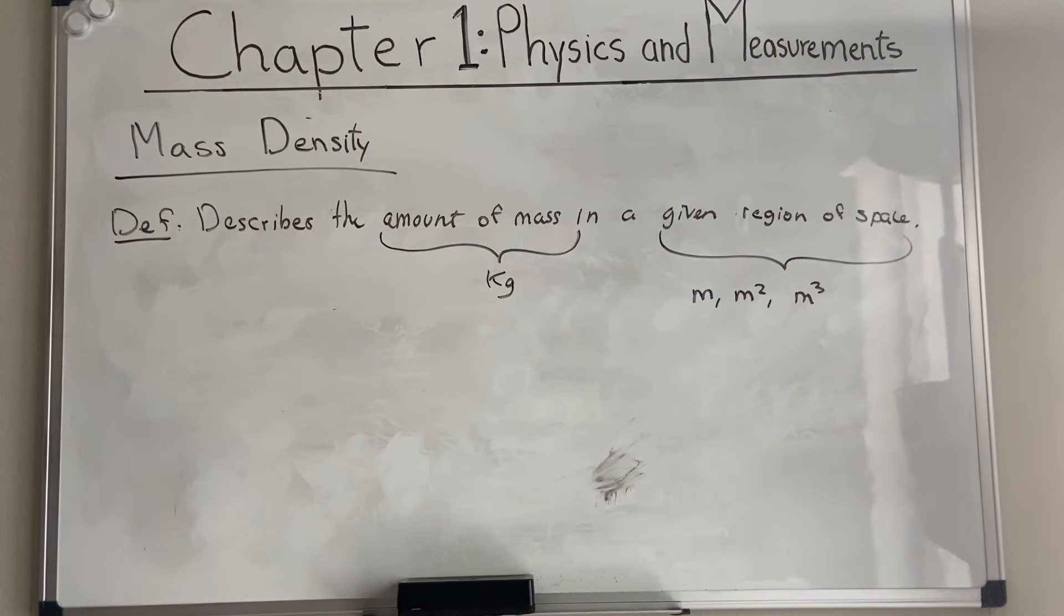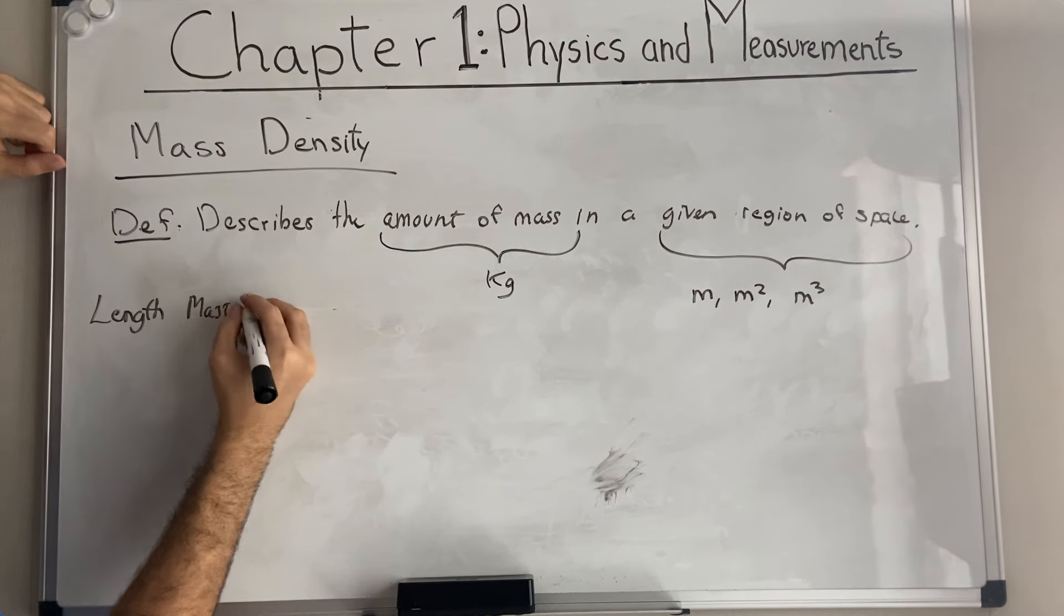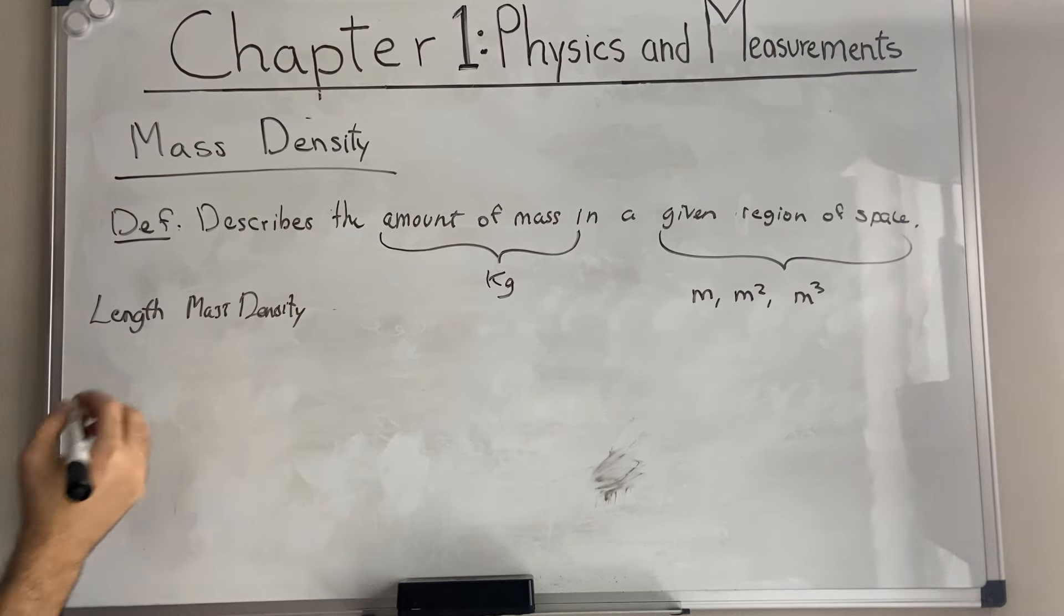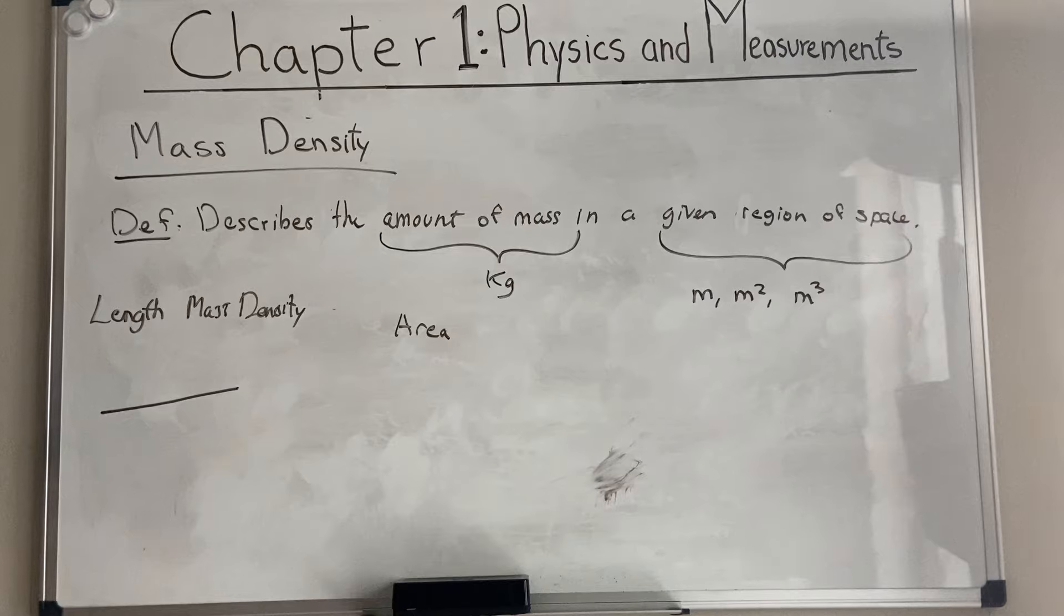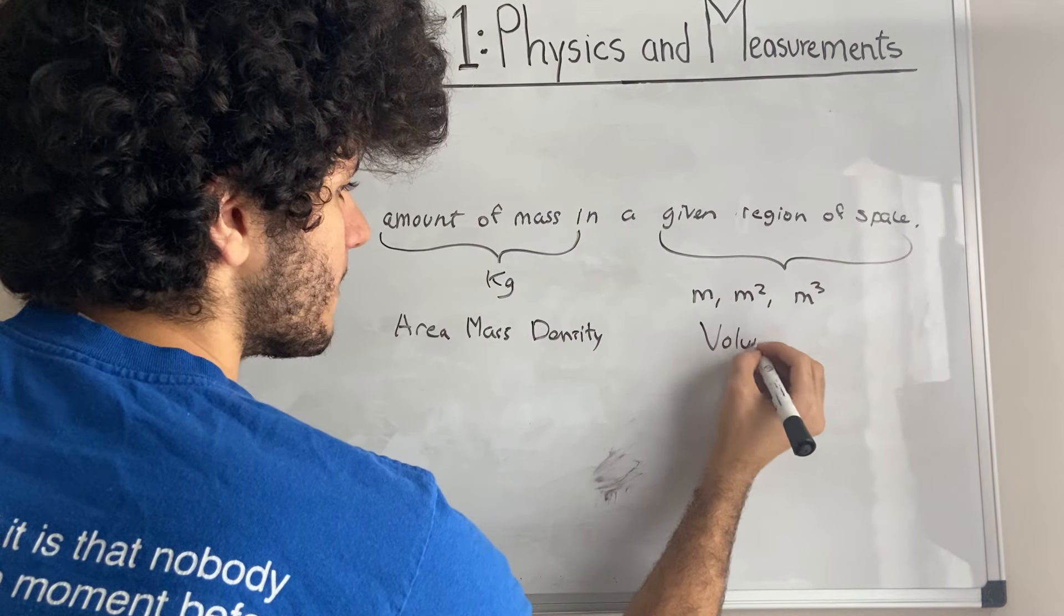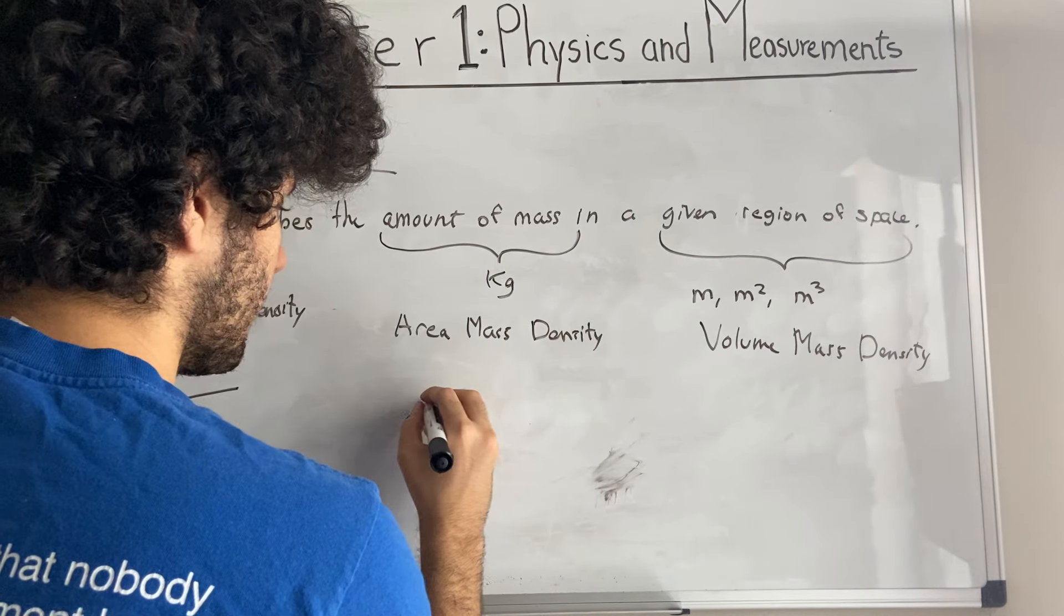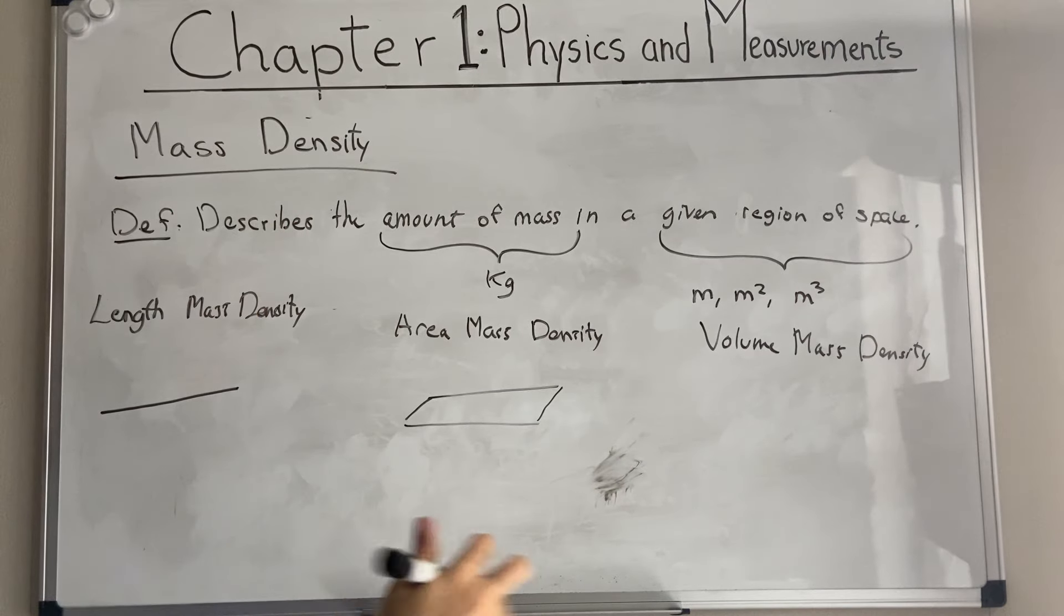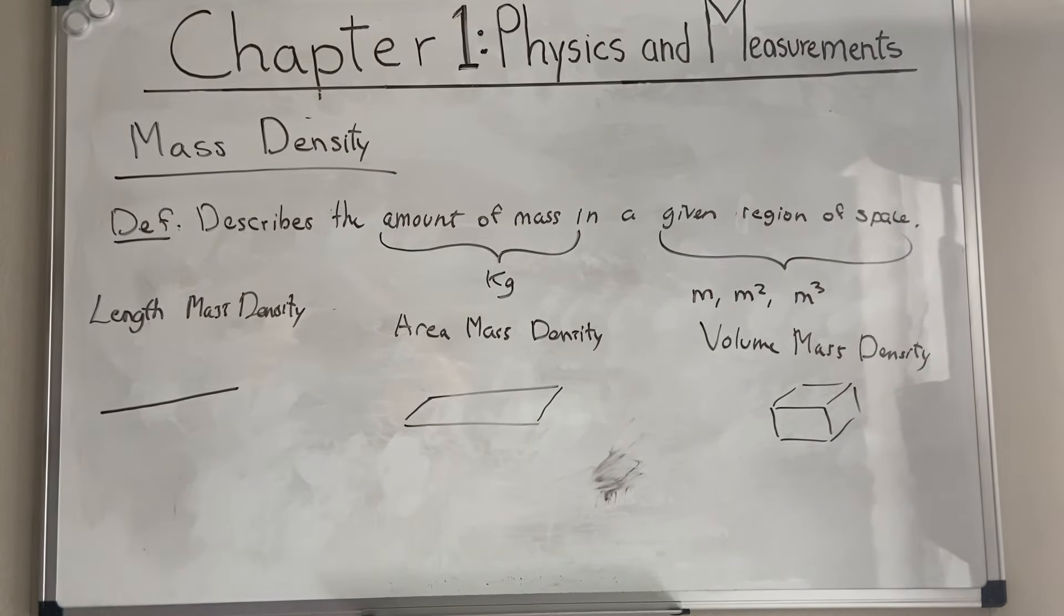Basically, we have three different types of mass density. We have the length mass density, then we have the area mass density, next we have the volume mass density, which is something that everyone is more familiar with. Let me just draw something so that we can understand this a little bit better. This is a plate, and here we'll have a little volume, a little block of something. Let's call that a brick maybe.